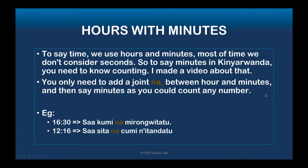We have talked about time when it is exactly on the hour — with no minutes. Now let's say 30 minutes past 18:00. To say time with minutes, you use the hour and then the minutes. Seconds are rarely used in everyday time-telling. Between the hour and minutes, you need to add the joining word 'na.'